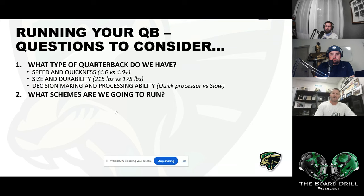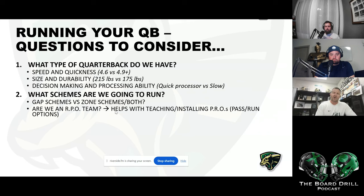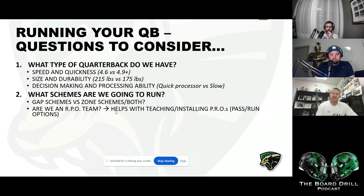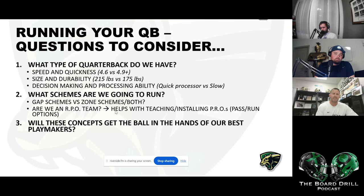Number two consideration: what type of schemes are we going to run? What do you guys already do on offense — are you a gap scheme team, a zone scheme team, or both? The quarterback run game and pass run option concepts need to fit into what you already do offensively. If you're already an RPO team — traditional mesh RPO — it'll be easier to transition into the pass run option stuff and quarterback run game.